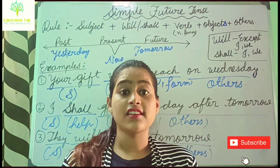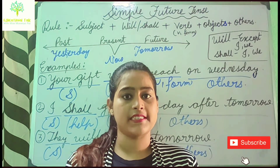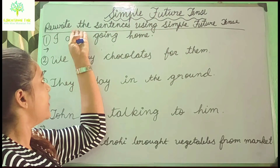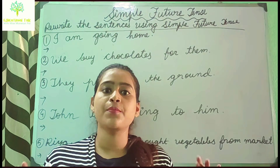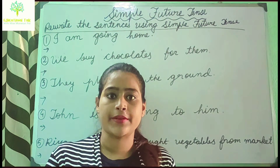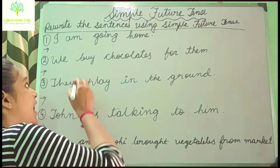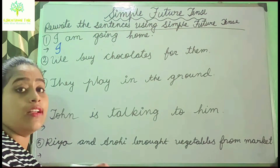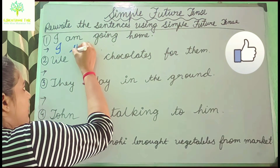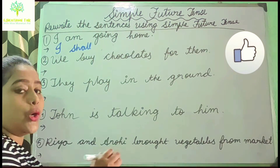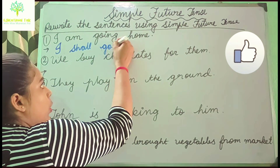Now I am giving you some exercises. Rewrite the sentences using simple future tense — the sentences are not currently in simple future tense and we have to change them. First one: 'I am going home.' The subject is 'I', so I write 'I', then 'shall' — because the subject is 'I' — then 'go' in V1 form, then 'home'. Answer: 'I shall go home.'